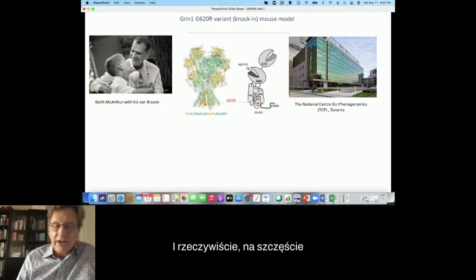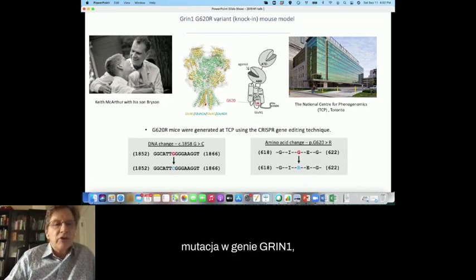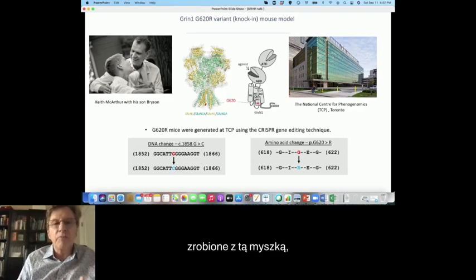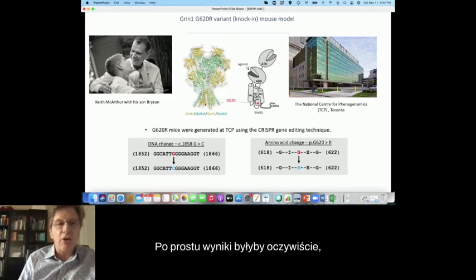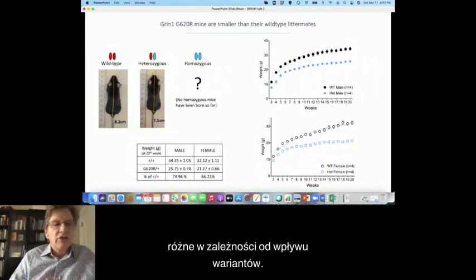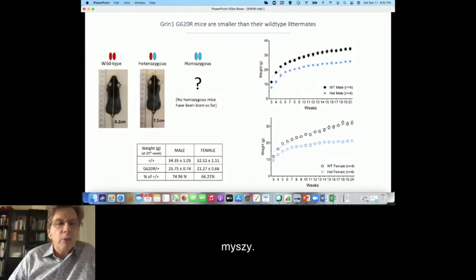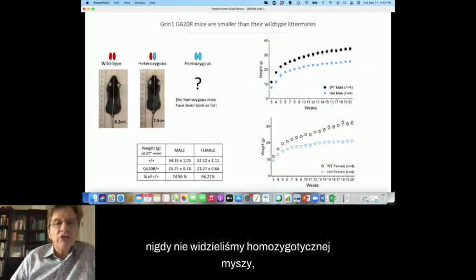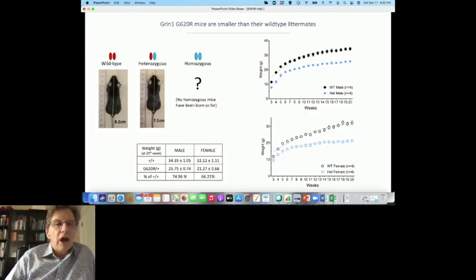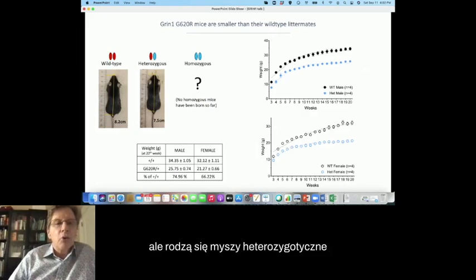And I had been in Toronto for a few years and realized that we actually had a fantastic mouse facility, the National Center for Phenogenomics, which is very good at making mouse models of human disorders. So I said that I thought there was a good chance that the TCP could make a mouse model. And indeed, fortunately, they were able to come through and they made a single point mutation in the GRIN1 gene, substituting G for R, glycine for arginine. So I'm going to tell you a little bit about what we have done with this mouse. But of course, the same could be done for any mouse model, just the outcomes would be different depending on the impact of the variant. So the first thing we found is that the mice were born. We never, and to this date, we've never seen a homozygous mouse, which means that it's almost certainly embryonic lethal if you carry two copies of the variant.